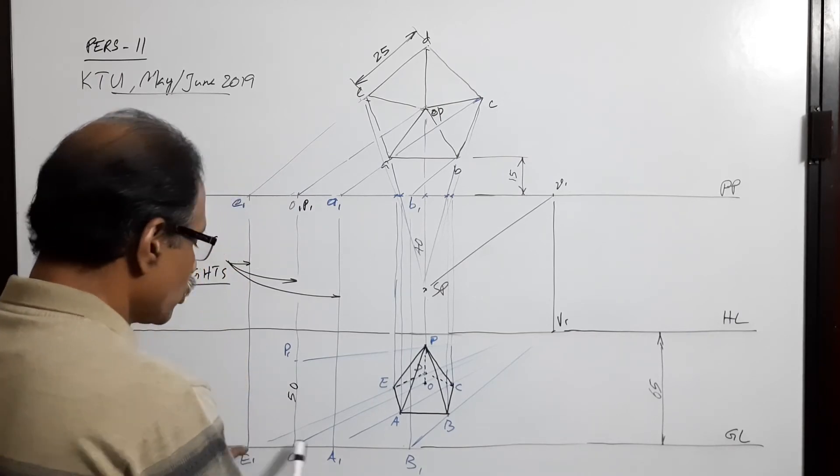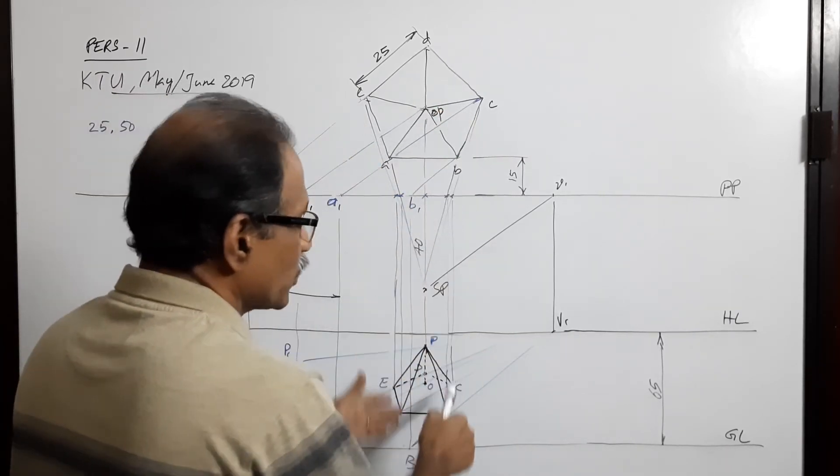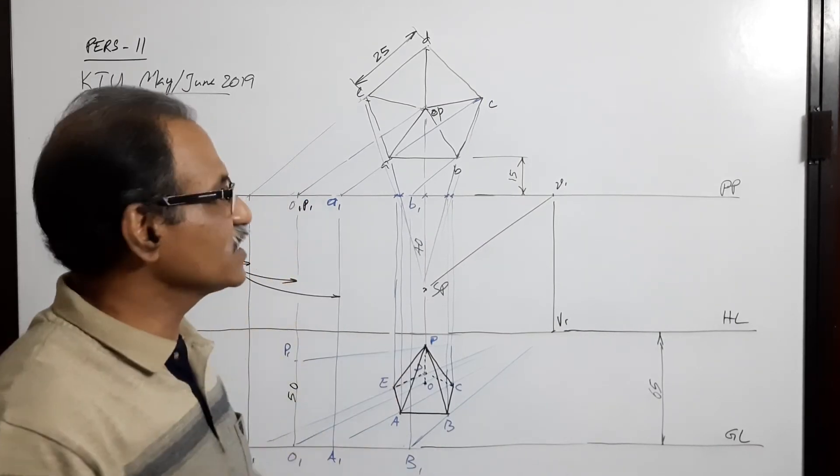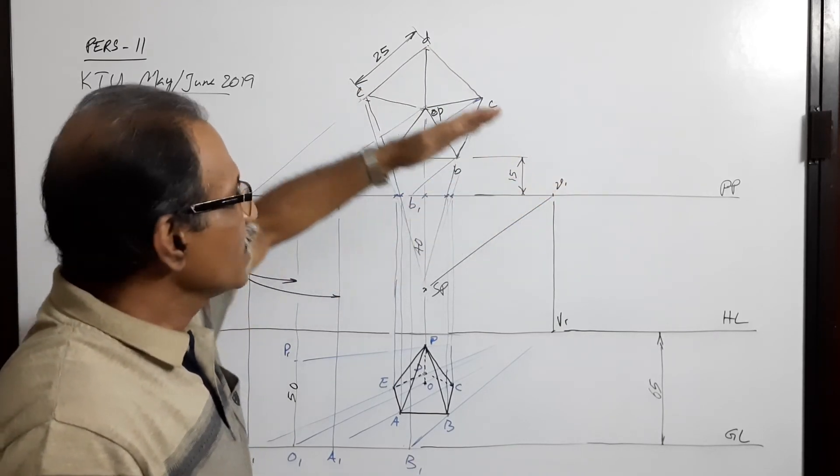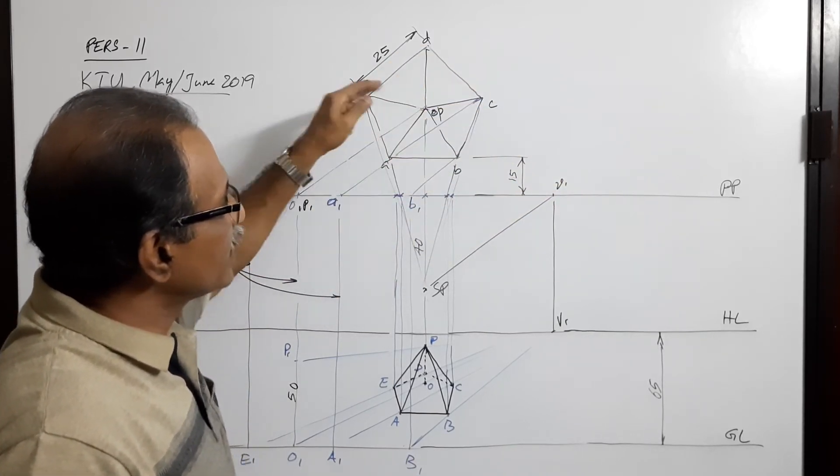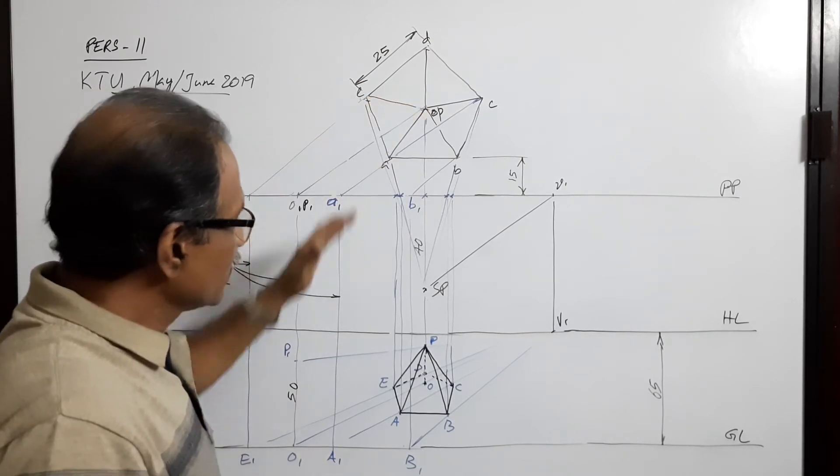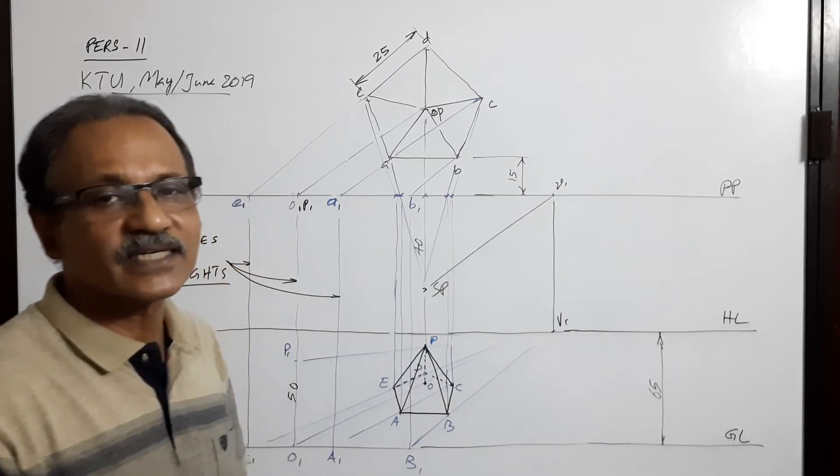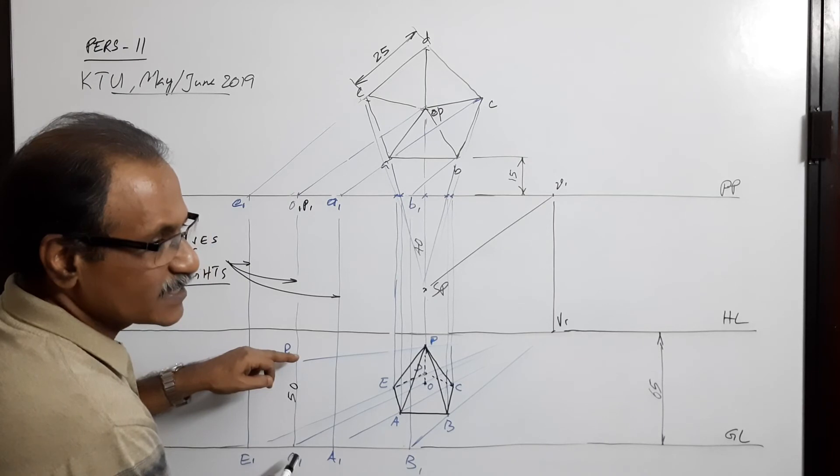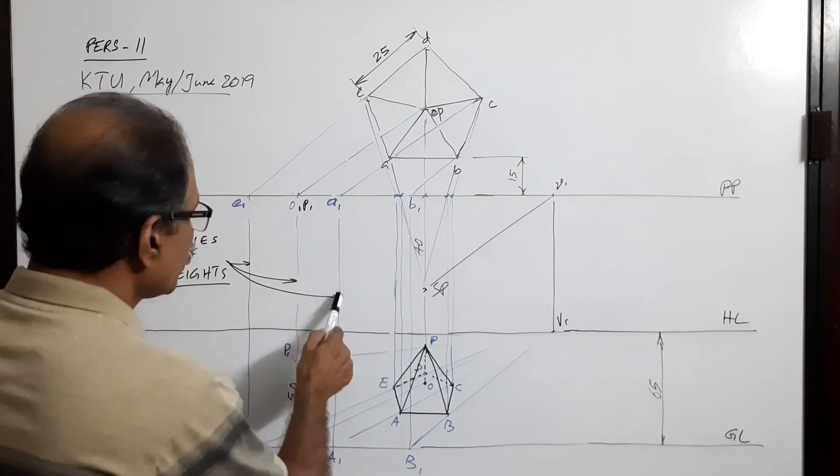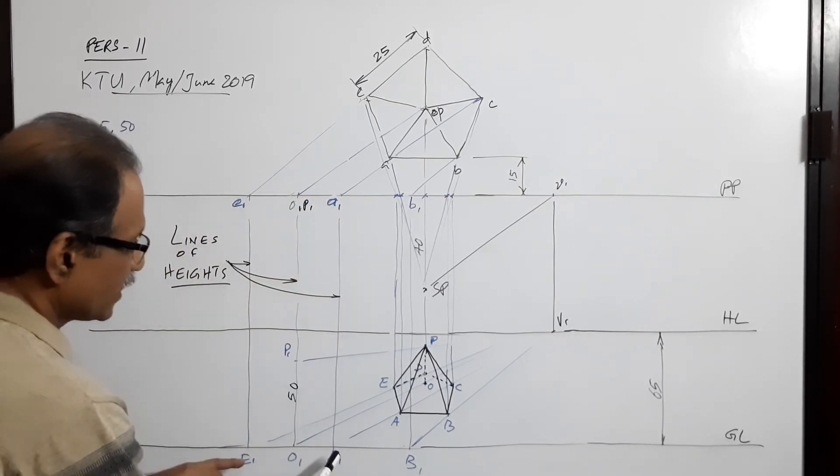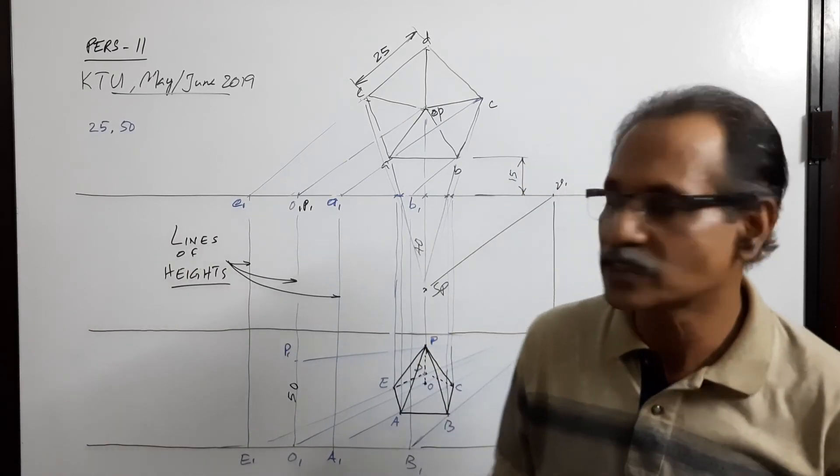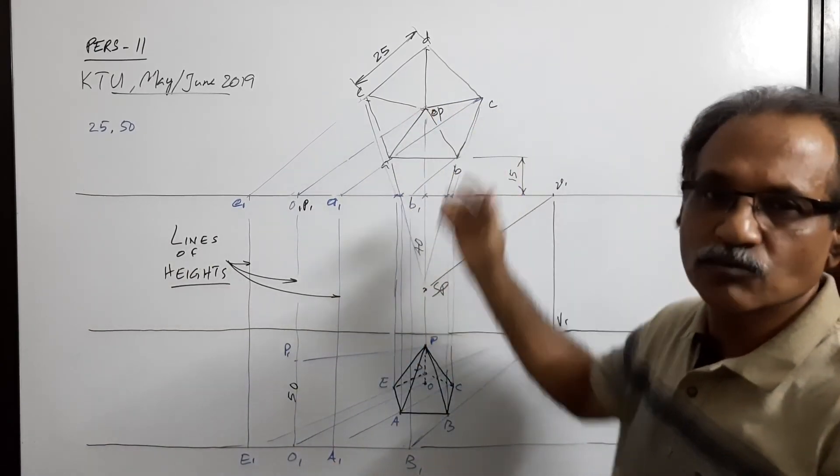I repeat: join all these points to V1, onto which drop the corresponding intercepts. That's all. This method is comparatively easy because you have got only one vanishing point. All these lines are drawn through the base points and the axis so that the intercepts when dropped onto those lines will give you the actual points. This height O1 P1 is the axis height of the pyramid, 50mm. All these lines which you drop down to get the perspectives are called the lines of heights. This is the easiest method to draw this problem instead of finding many vanishing points.